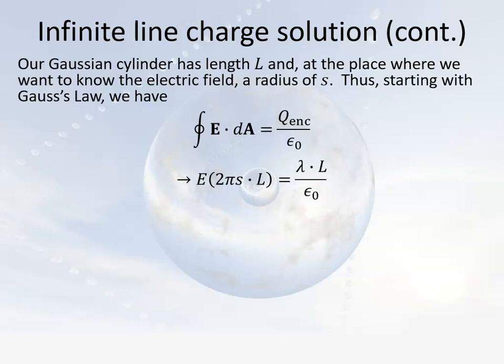The only thing that contributes to the electric flux is the actual cylindrical surface itself. Its circumference is 2πs, since the radius is s, and the length is L, so the area is 2πsL. Since the electric field is constant along that area, we can pull everything out of the integral, giving us E times A = E times 2πsL. The enclosed charge is lambda times L, so the L's cancel — as they must, because the electric field cannot depend on our imaginary surface. We get E = 2k·lambda / s.